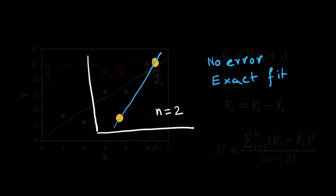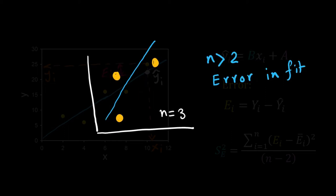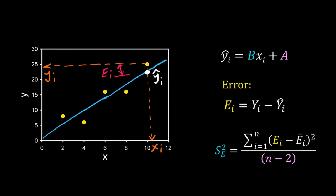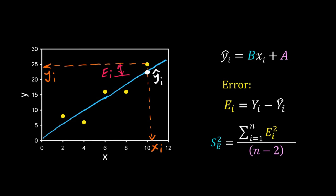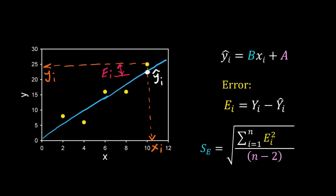If we have only two data points, we can fit a line without any error, so the question of variance of error does not arise. Error comes only when we have more than two data points, so the degrees of freedom for fitting a straight line is n minus 2. Since the mean of the error is zero, we can simplify and get the variance equal to summation of ei squared divided by n minus 2. The standard deviation of the error is just the square root of this variance — that is also known as the standard error of regression.